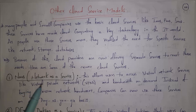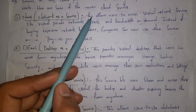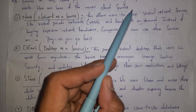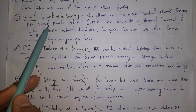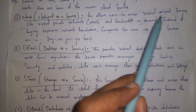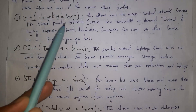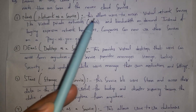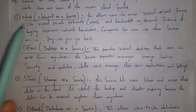The first one is NaaS, where NaaS stands for Network as a Service. Network as a Service allows users to access virtual network services like virtual private networks and bandwidth on demand. Instead of buying expensive network hardware, companies can now use these services on a pay-as-you-go basis.